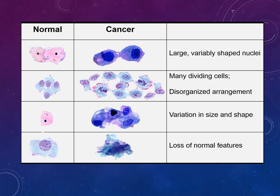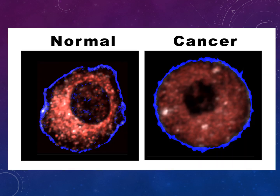Another diagram recaps the differences between normal and cancer cells — their shapes, sizes, and quantities — showing large variable-shaped nuclei, many dividing cells, variation in size and shape, and loss of normal features.